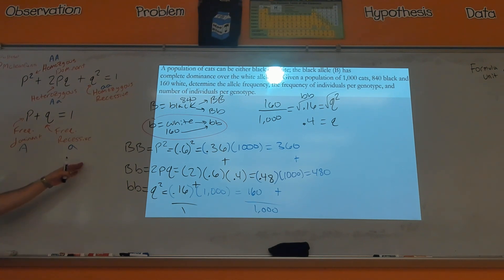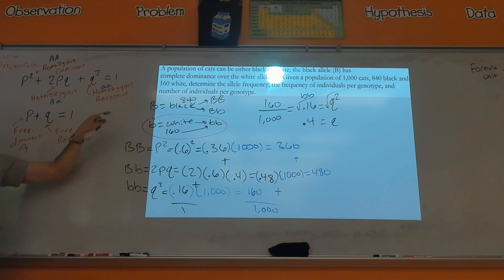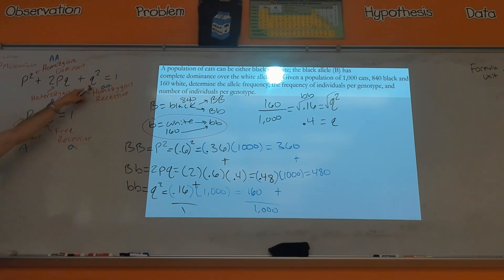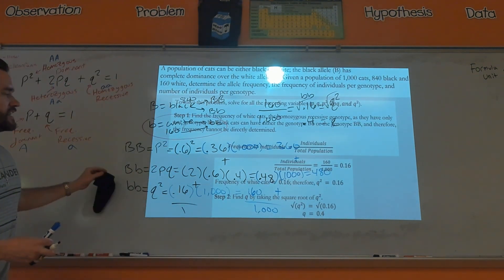It seems complicated but it all flows from one key insight: when they tell you 160 cats are white, remember that white cats must be little b little b, and little b little b is q². Once you have q², you find q, then p, and then everything else follows from the second equation.